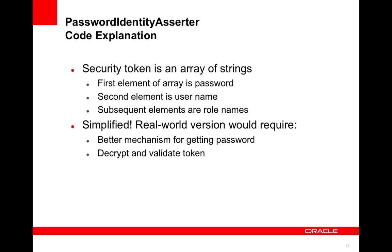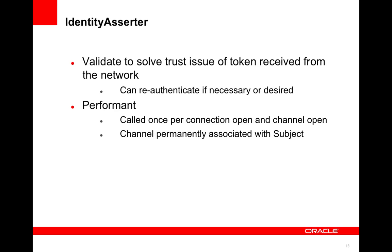I'm going to show a little bit later a very simple role-based access control. The purpose of the identity asserter is to validate, and it solves a trust issue, because in normal security practice you can't trust a token that you received over the wire — you don't really know where it came from. You want to be able to prove that it can be trusted, and that's the role of the identity asserter: I've just got this token off the wire, now I can check to see if it's really valid and if I can actually trust the identity it's asserting. This is performant because it only happens once per connection or once per channel open, so it does not happen repeatedly.